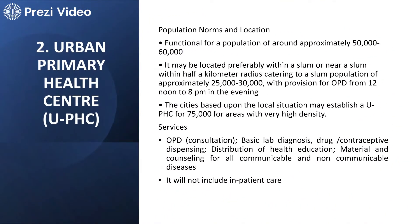Urban primary health centers look after a population of around 50,000 to 60,000 people and are located preferably near slum areas. They are ideally established for up to 75,000 people in very high density areas. They have facilities for OPD consultations, basic lab diagnostics, contraception dispensing free of cost, health education, and medications for several communicable and non-communicable diseases, all free of cost. However, they do not provide much inpatient care — for that, patients are referred to community health centers.